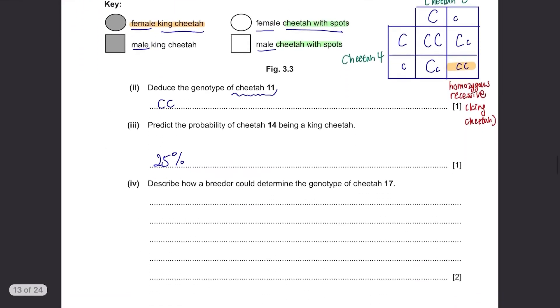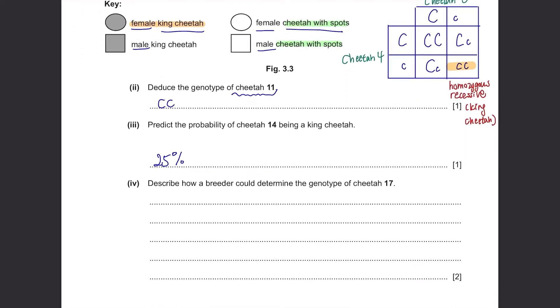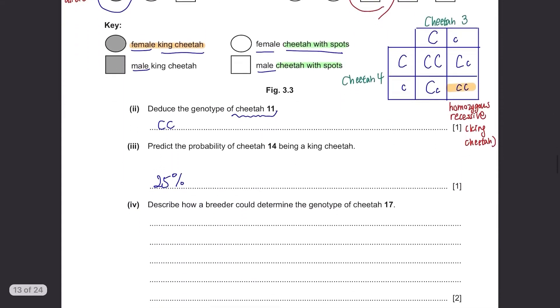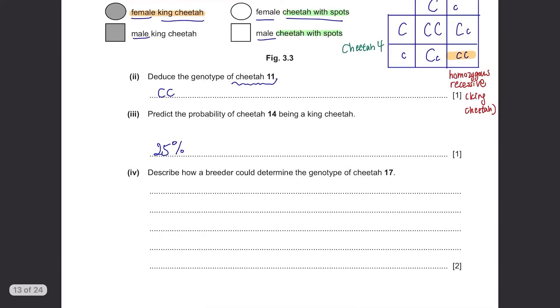Describe how a breeder could determine the genotype of cheetah 17. We can go through DNA testing to determine its genotype or we can perform a test cross. Test cross is breeding with a homozygous recessive in this question, the king cheetah.